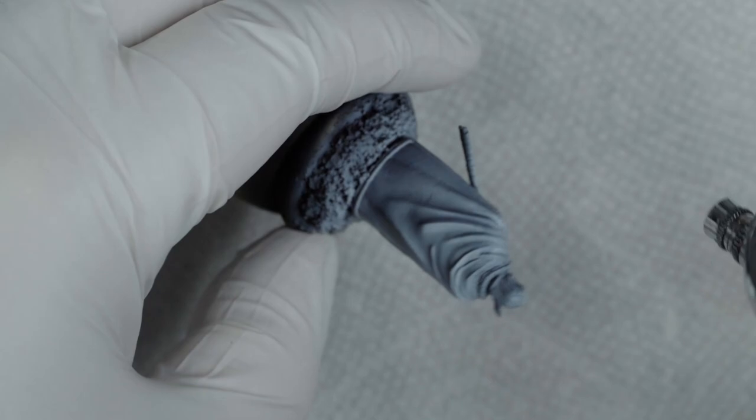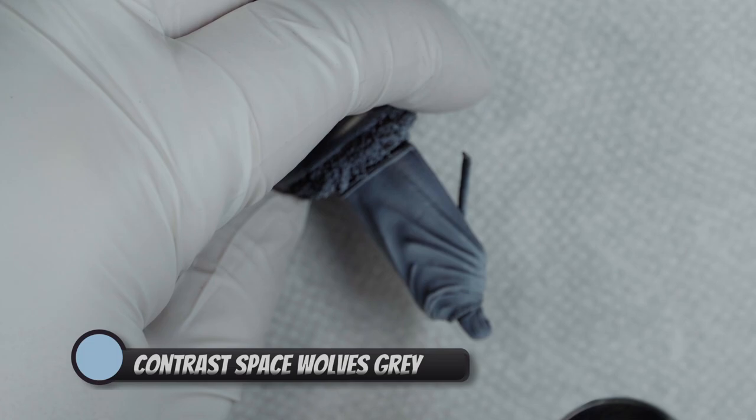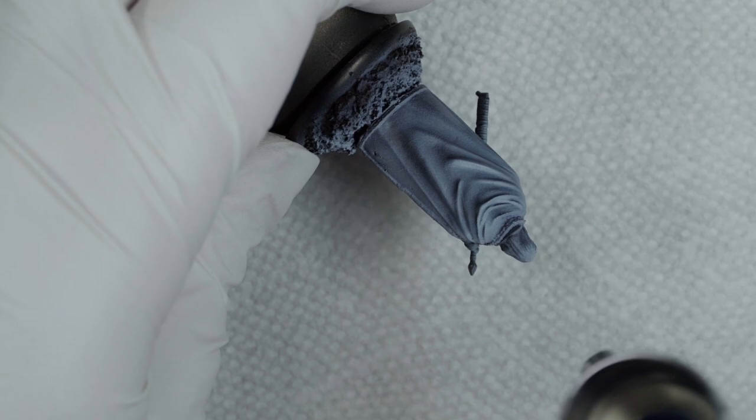Continuing on with the airbrush, it's time to turn this cape gray. Space Wolves gray is really transparent and subtle, but it tints the whole gradient into the blue spectrum and that's where we want it for this model. The Starks are a cold people, and their clothing should be colored to match.